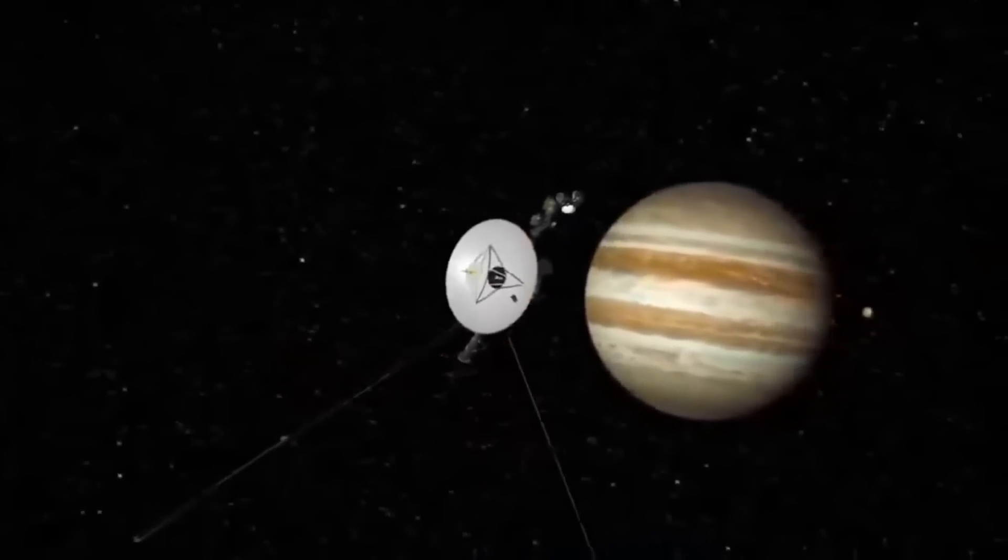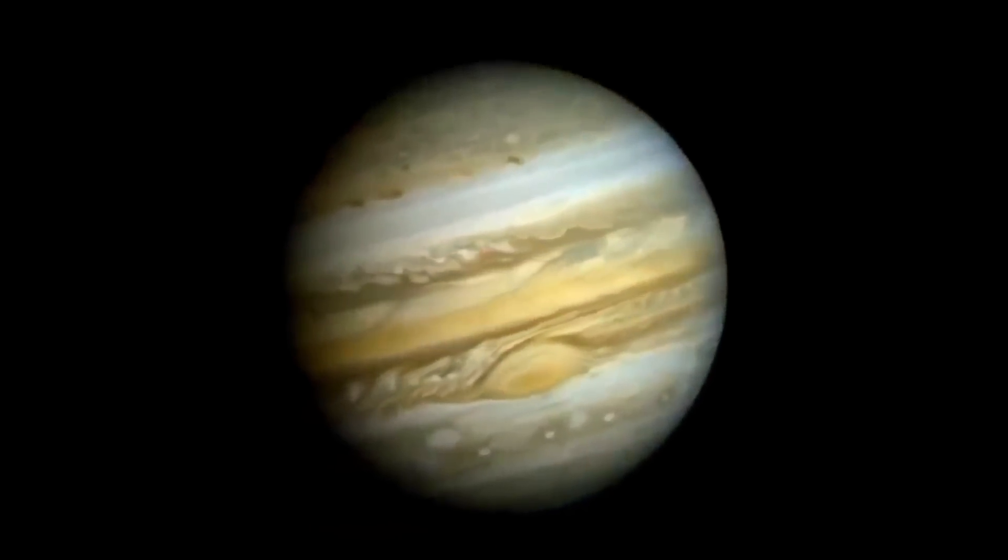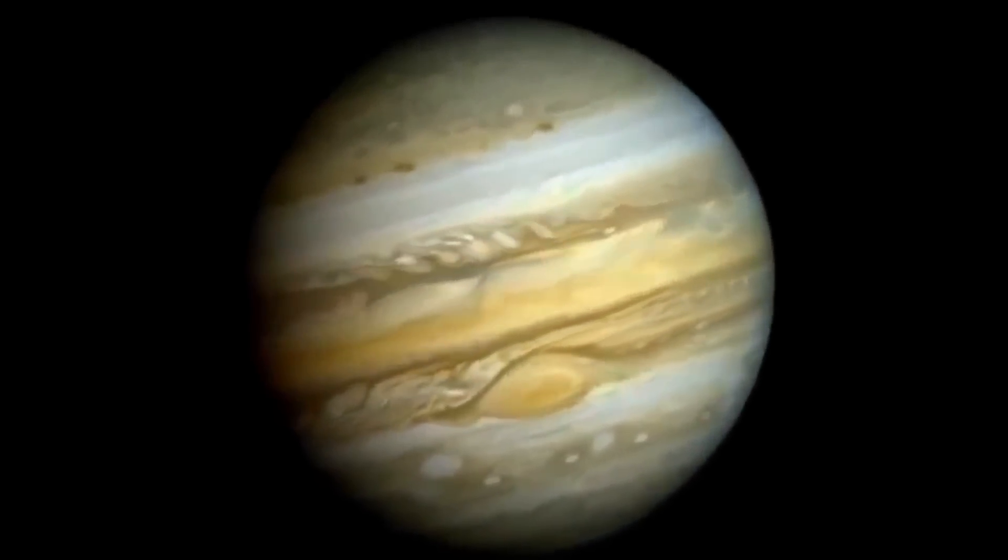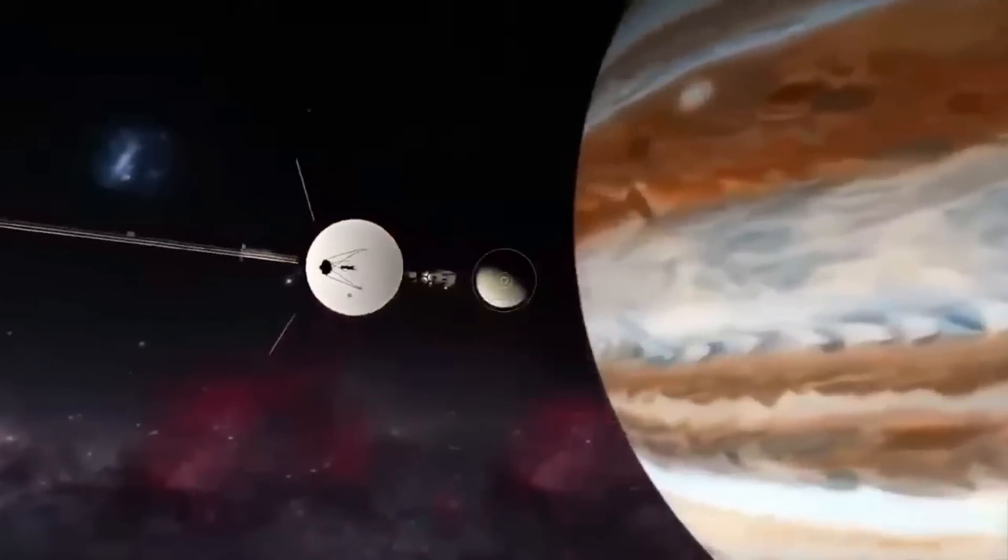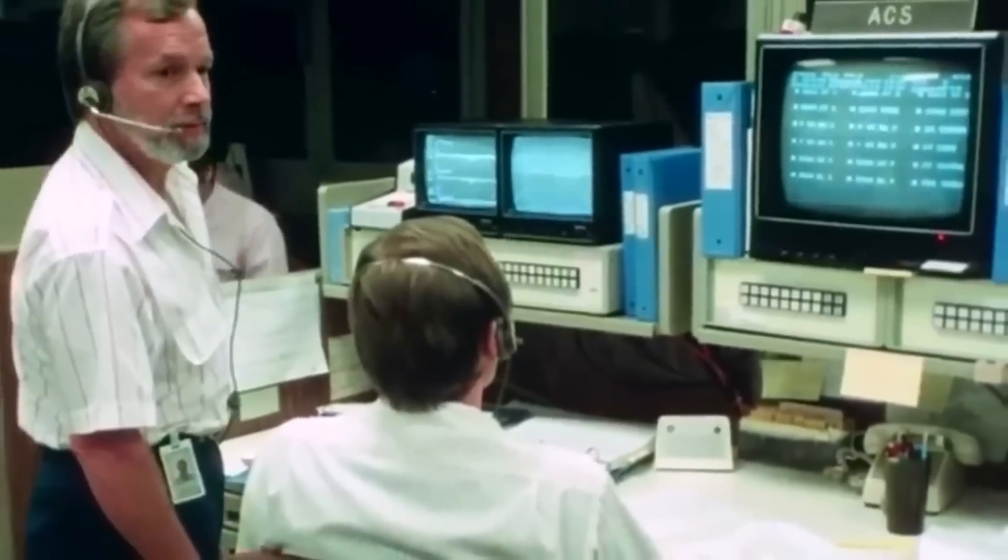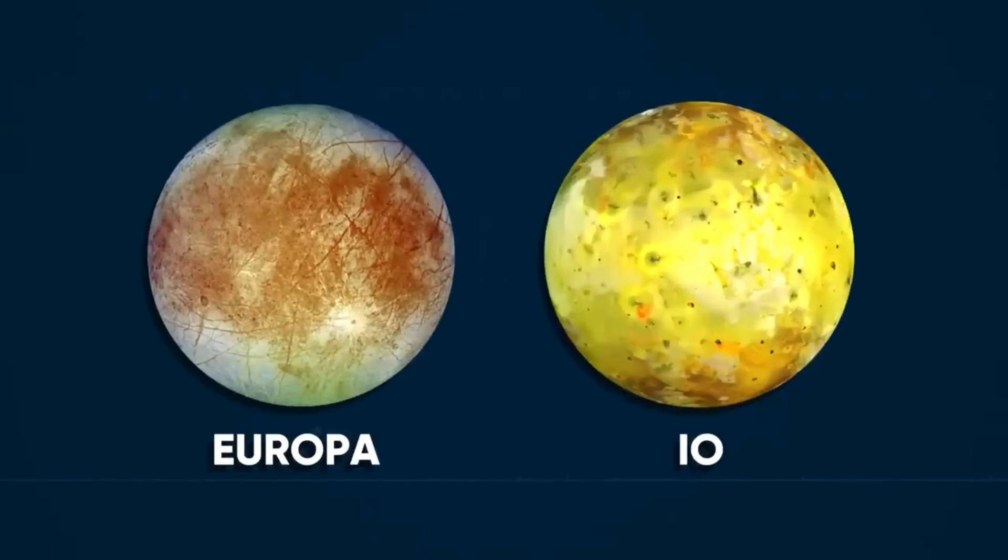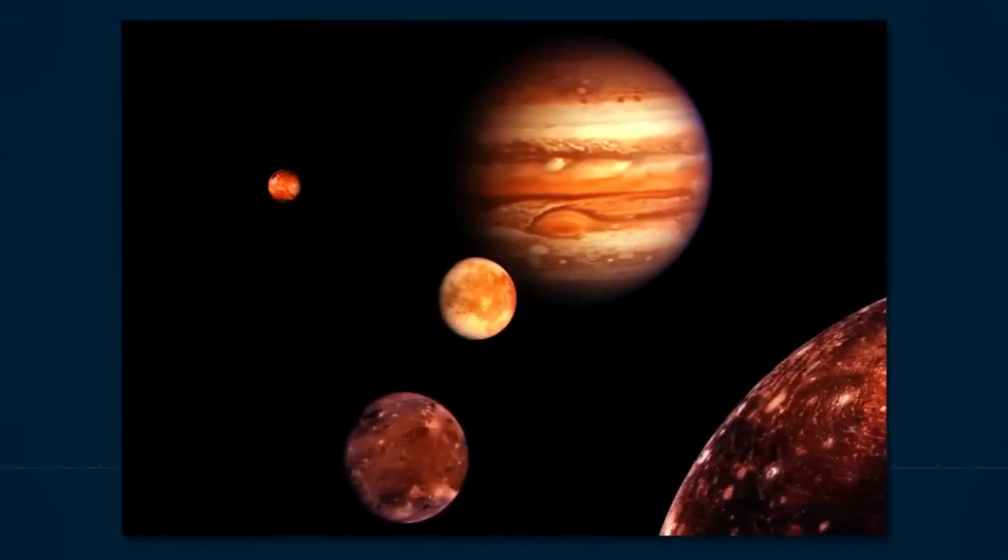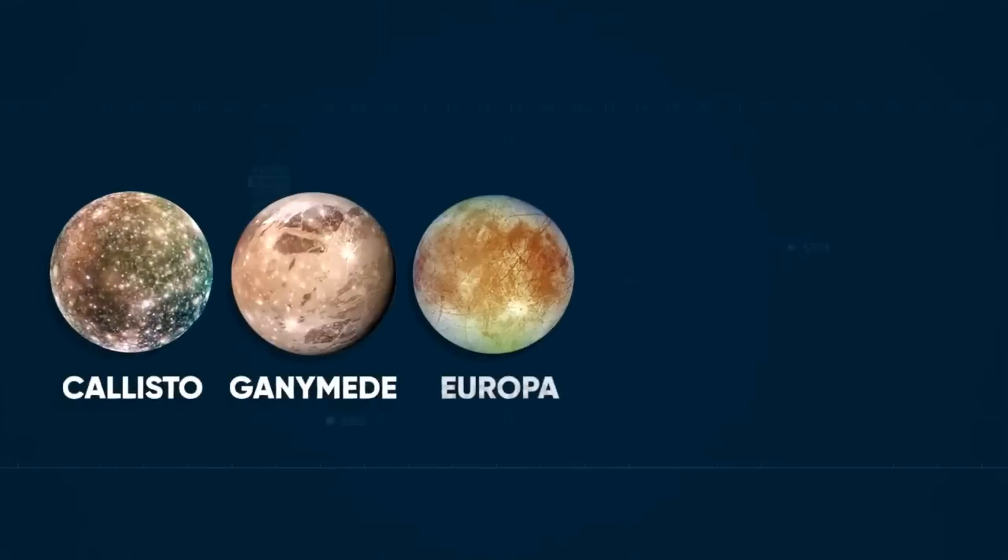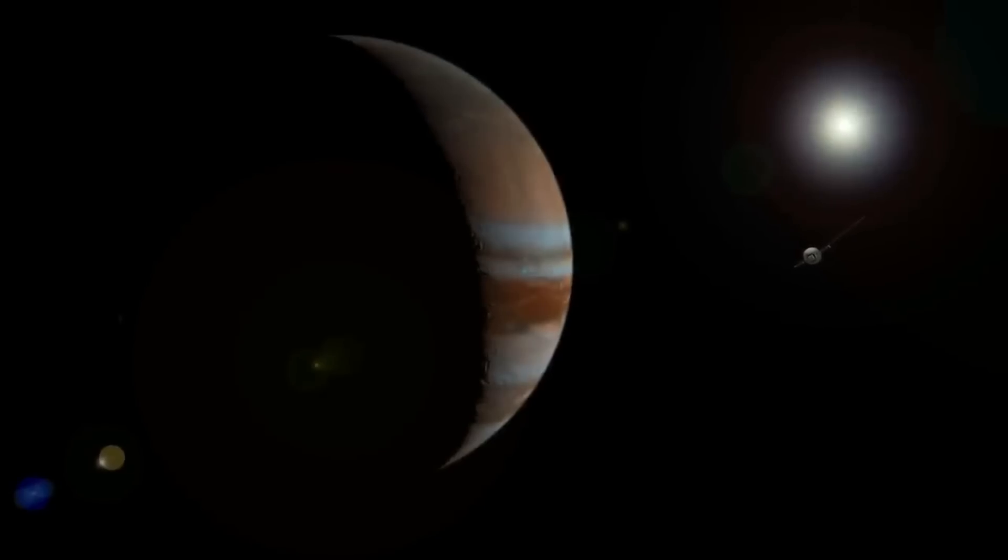On April 24, 1979, Voyager 2 started sending back pictures of Jupiter that would be used to make time-lapse movies of how the atmosphere moves. Voyager 2 came closer to Jupiter's moons than Voyager 1 did on its way into the system. Scientists were especially interested in learning more about Europa and Io. It sent back great pictures of Jupiter's whole system, including its moons Callisto, Ganymede, Europa, Io, and Amalthea, which Voyager 1 had already looked at.